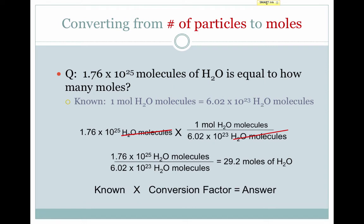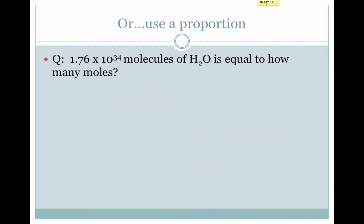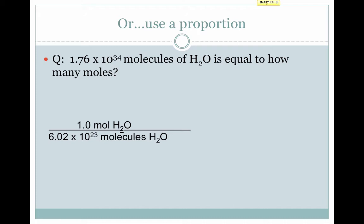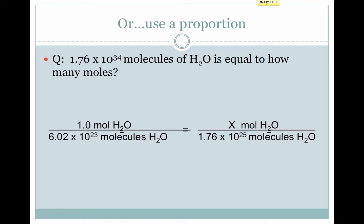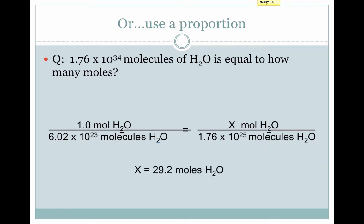Again, we did the known times a conversion factor to get our answer, and the conversion factor was the unit we wanted — moles of water molecules — over the unit we had from the given. You can also choose to do this using a proportion. The proportion would look like this: one mole of water equals 6.02 times 10 to the 23rd water molecules, set equal to x moles of water over 1.76 times 10 to the 25th molecules of water. It's important that the same unit is on the bottom of each fraction and the same unit is on the top of each fraction. Solve for x and you get the same answer.